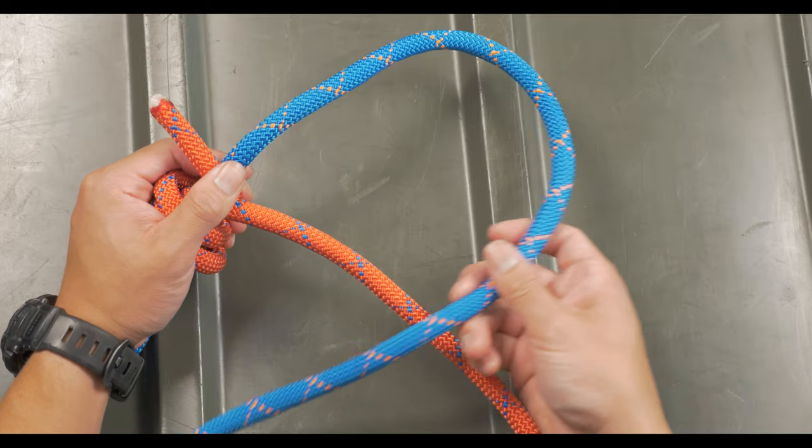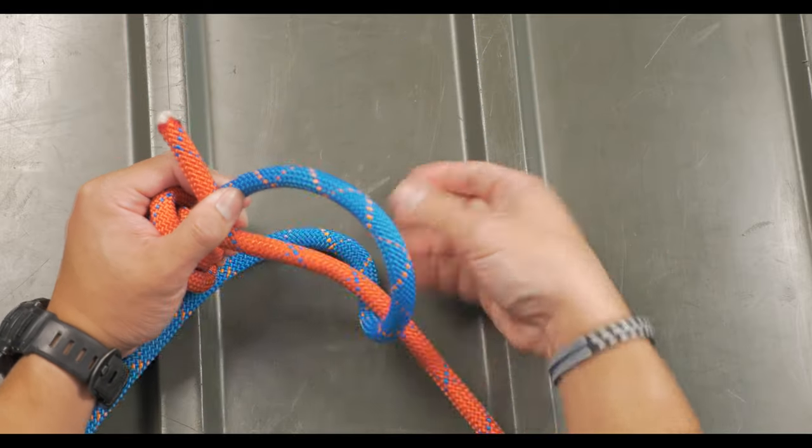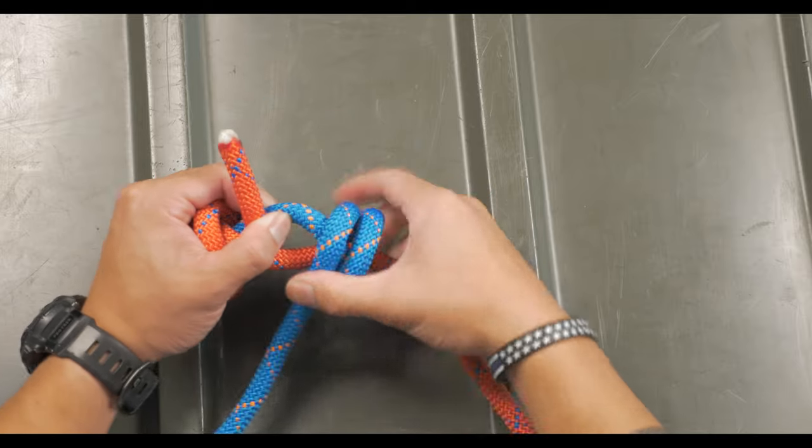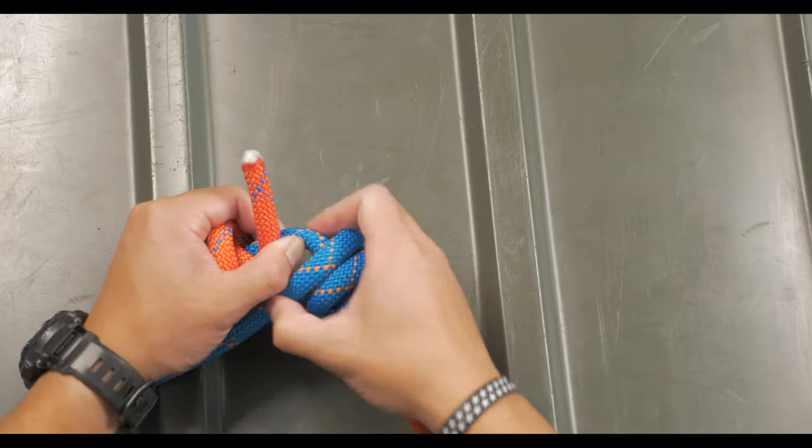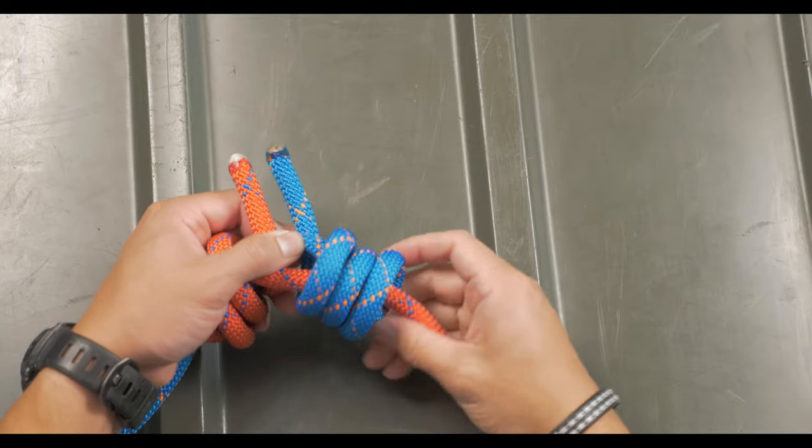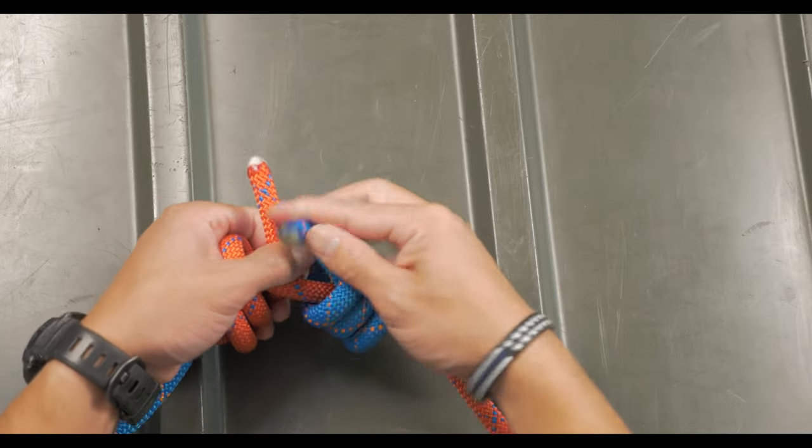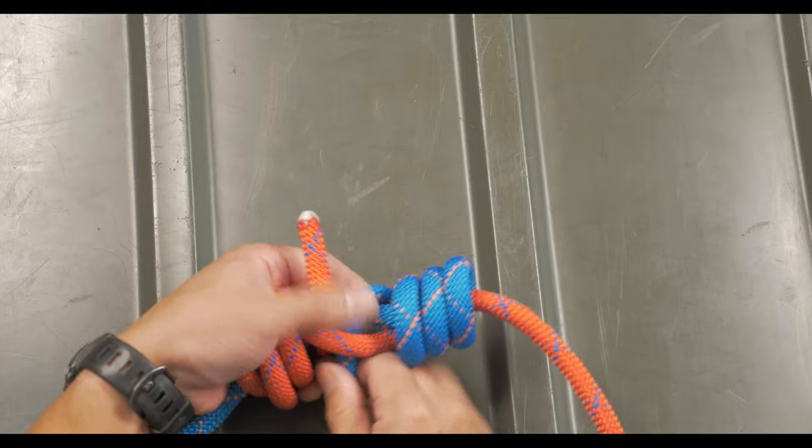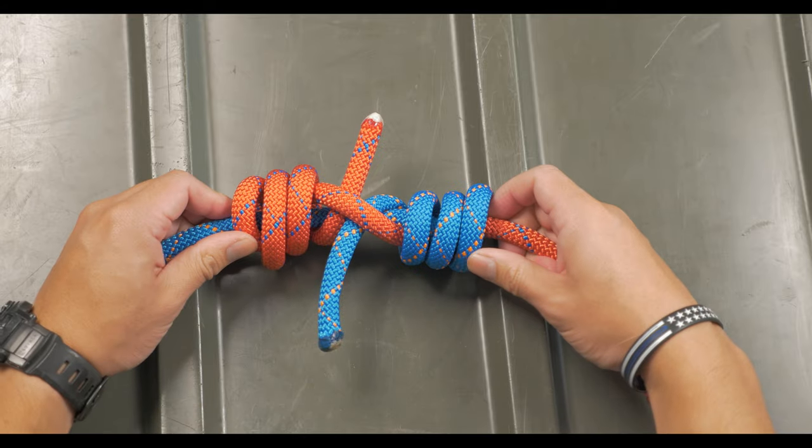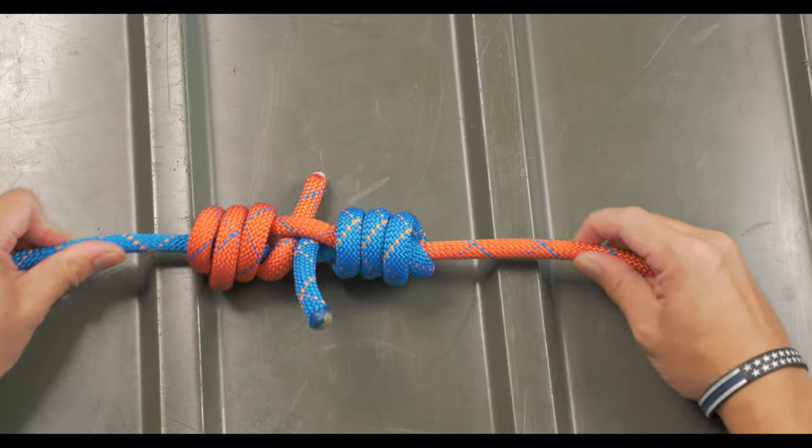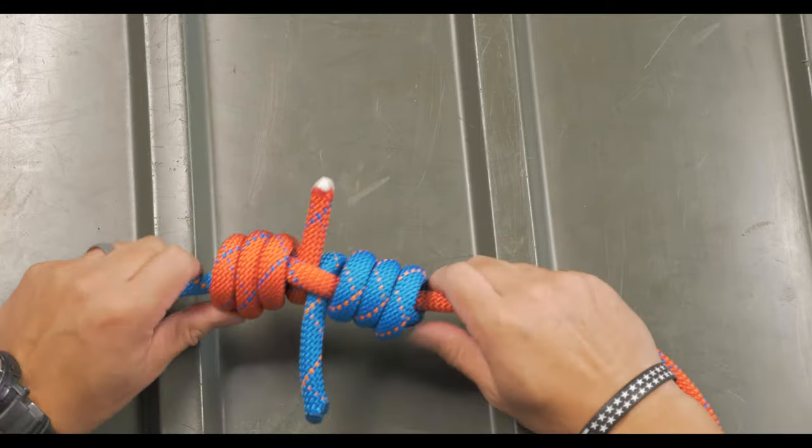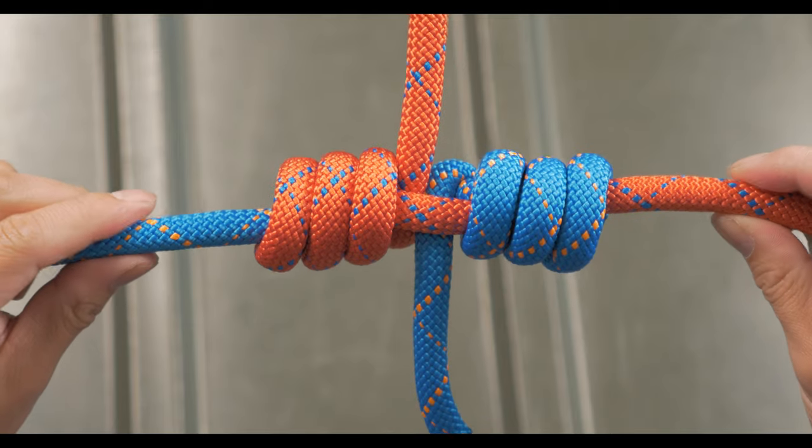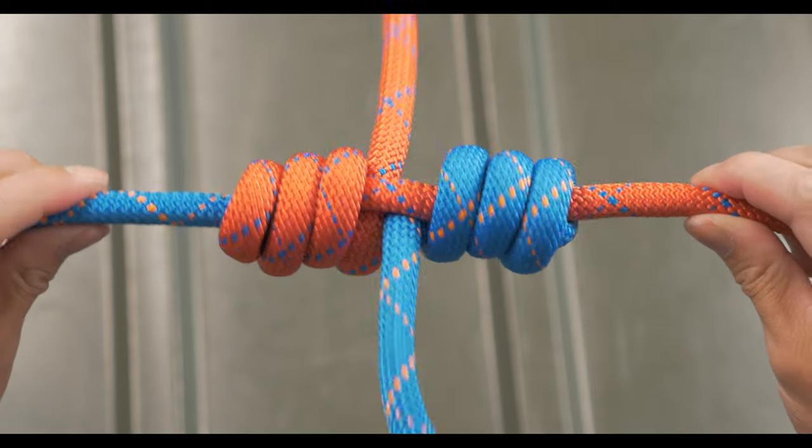The next step is to mirror the other side, doing the exact same thing, only going the opposite direction. And you'll finish by tucking the working end in the same fashion between the two lines. When you're done, the working ends are going to face opposite directions.